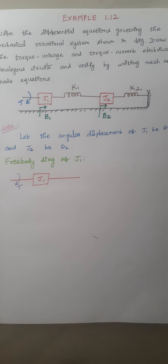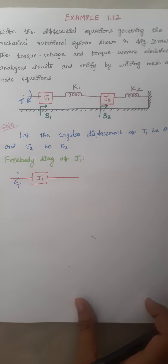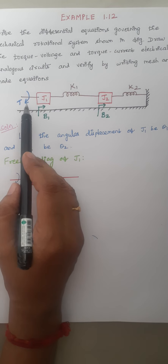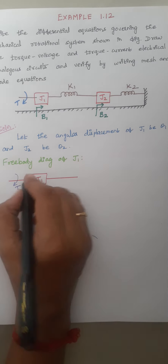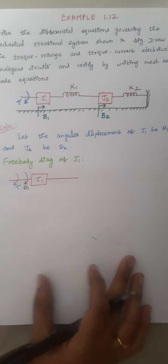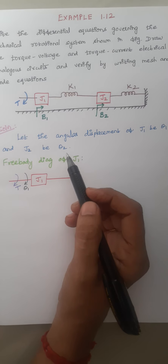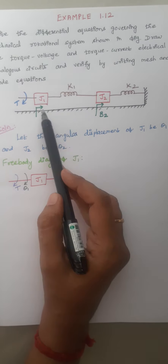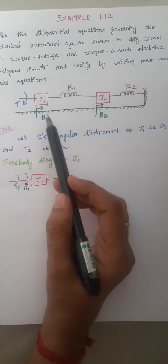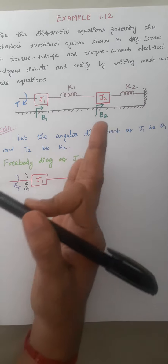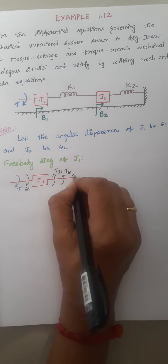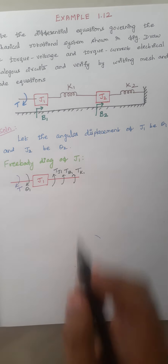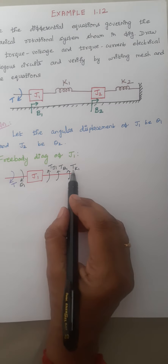The first step is to draw the free body diagram of J1. T is the applied torque, and we are considering the angular displacement of J1 as theta 1. Count the number of elements connected with J1 — totally two elements are connected. So the total number of opposing torques will be 3: one produced by J1 itself, another by B1, and another by K1.